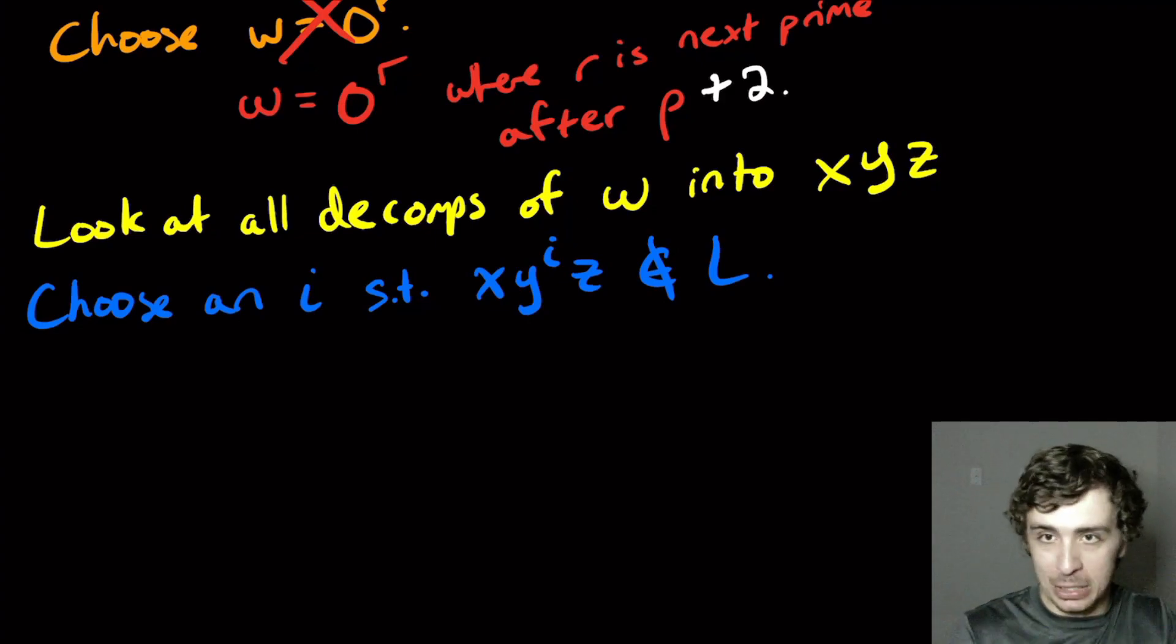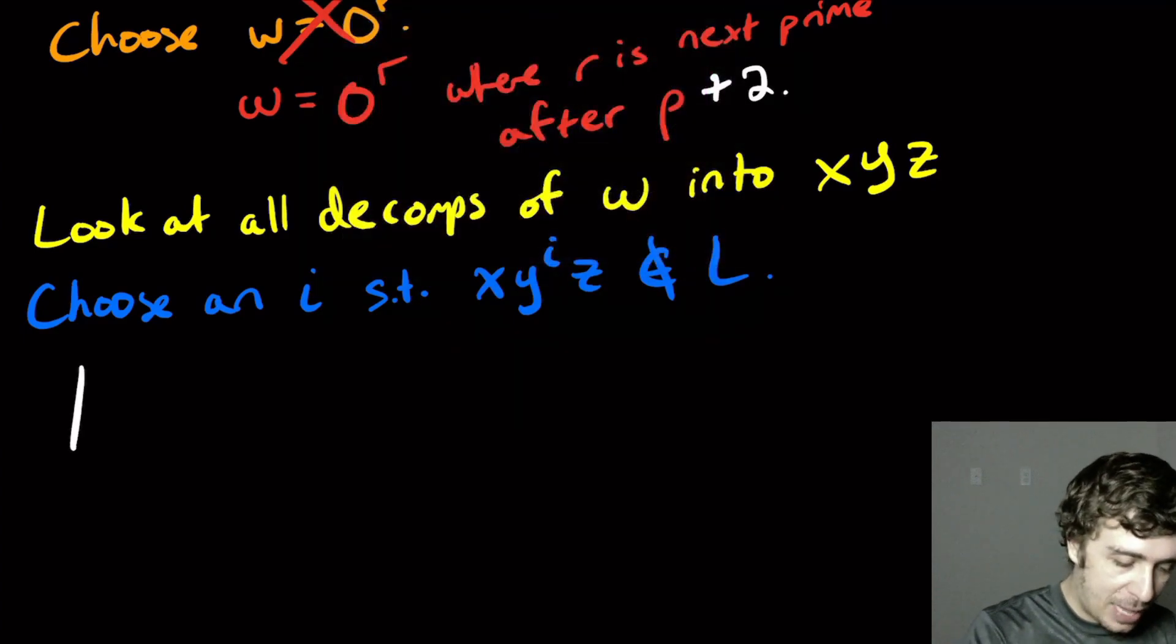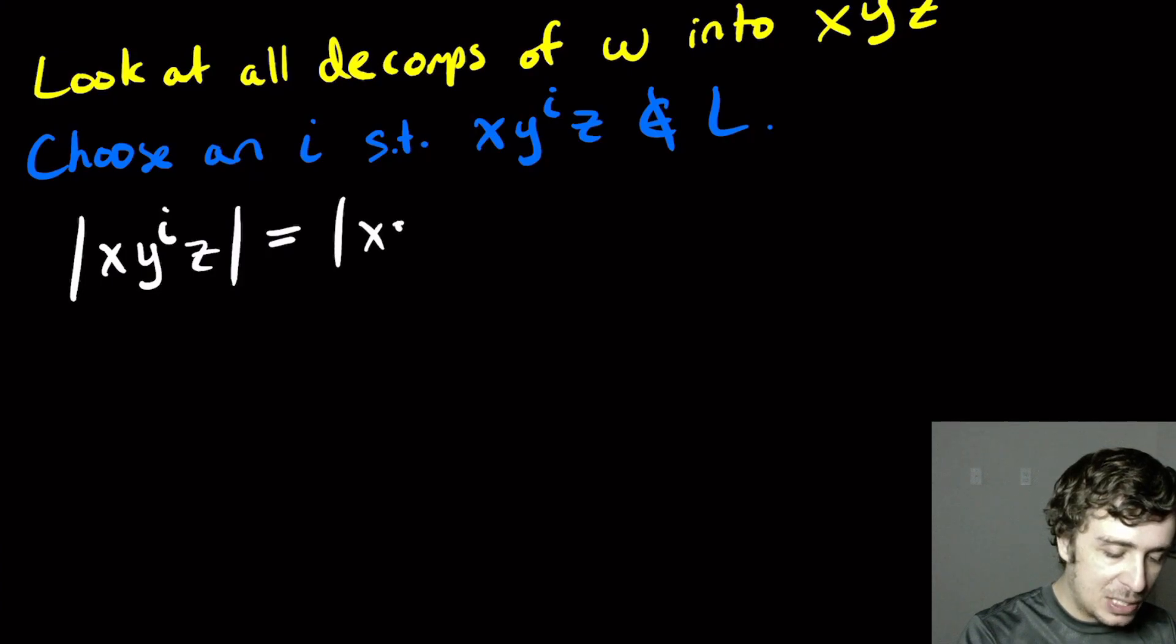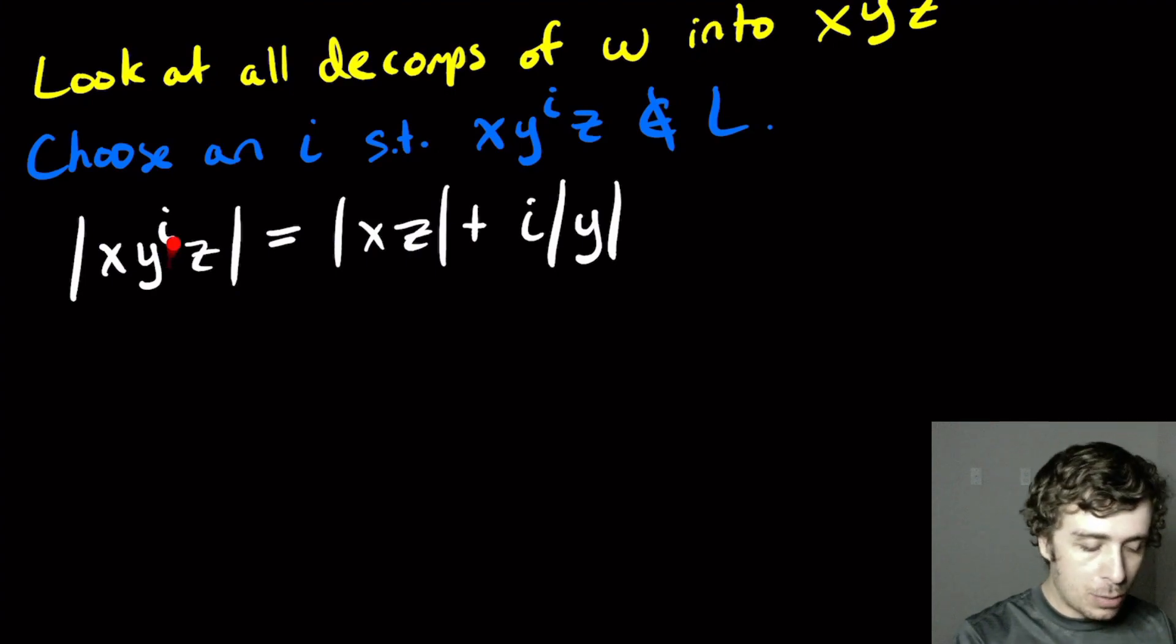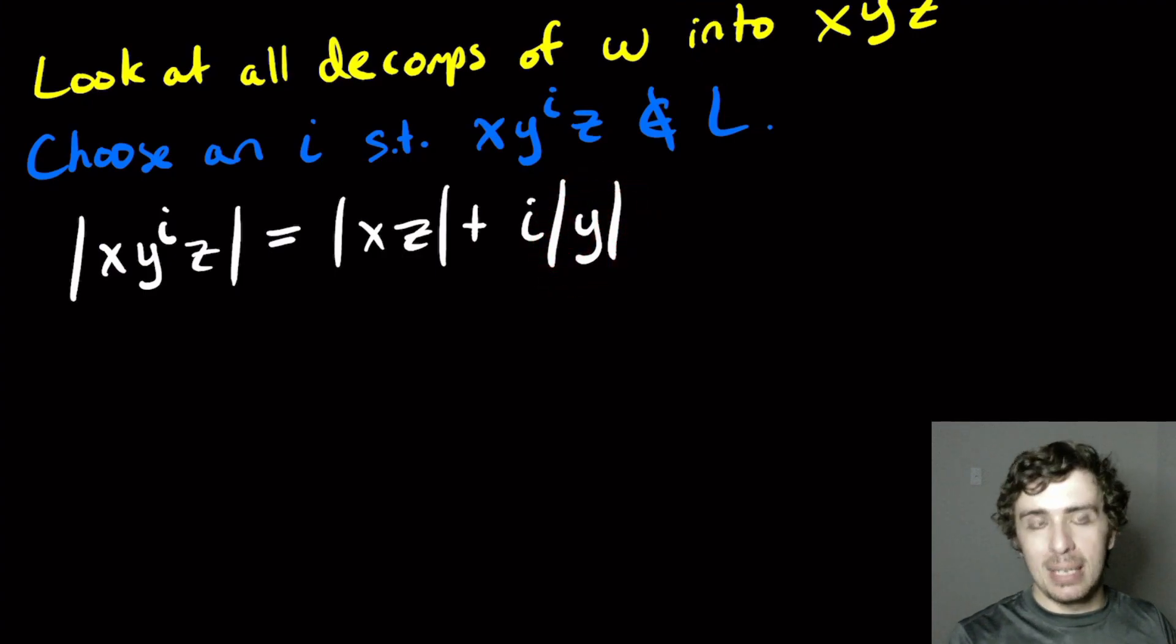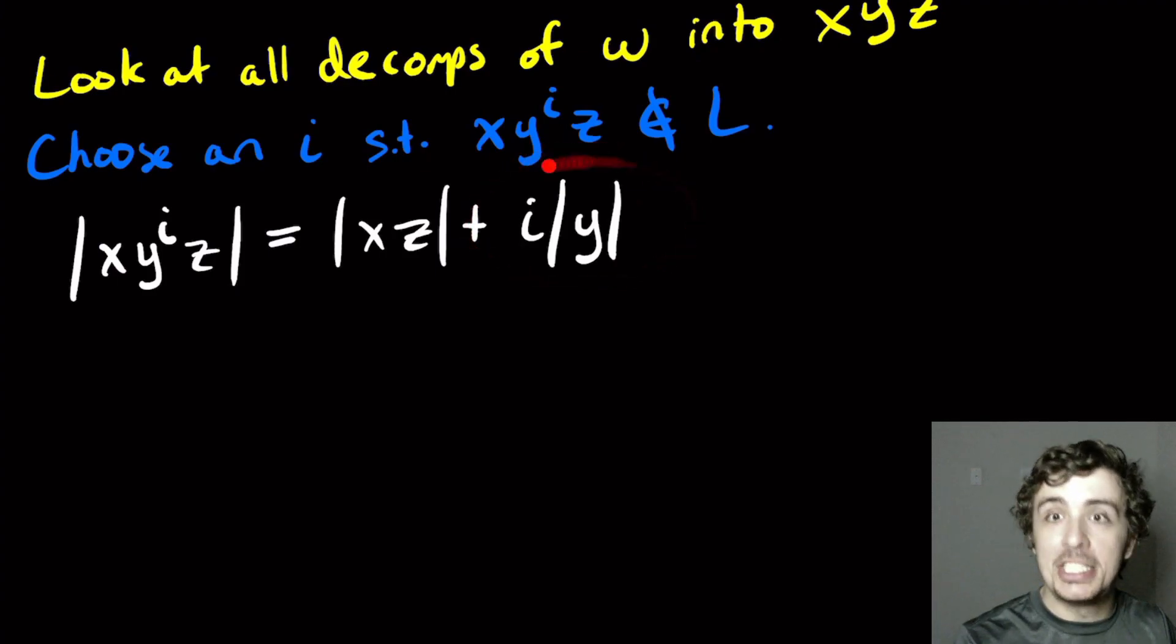Since the string is only zeros, the only thing that really matters here is the length of the string, not the string itself. So I want to look at the length of x y to the i z. Well, this is equal to the length of xz plus i times the length of y. Because I have a single copy of x, a single copy of z, and y to the i, that's just i copies of y.